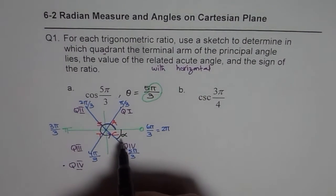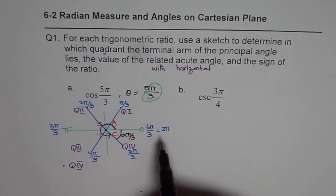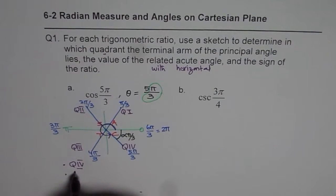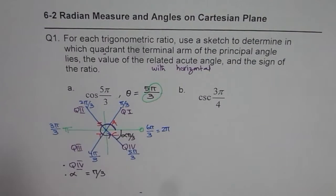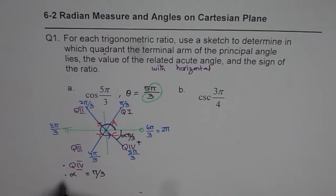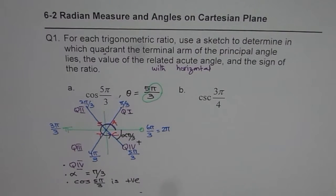Alpha here is six pi by three minus five pi by three, or equivalently two pi minus five pi by three. So alpha, the related acute angle, equals pi by three. The last part is the sign of the ratio. Cosine is positive in quadrant four, so cosine of five pi by three is positive.